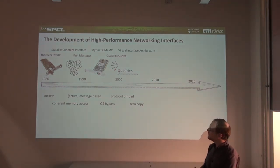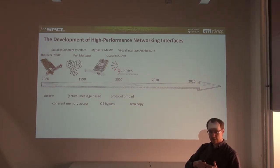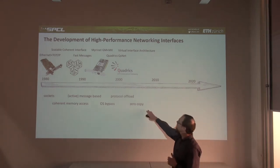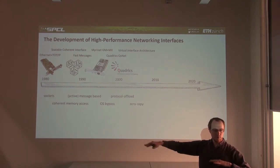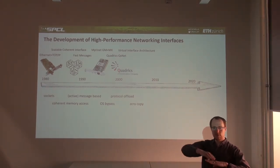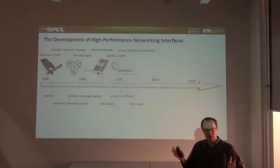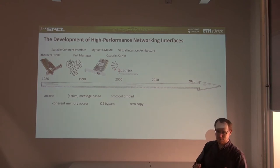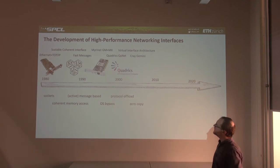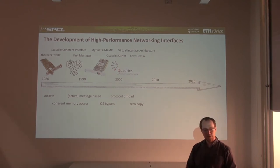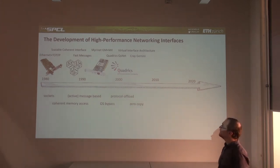This was followed by the Virtual Interface Architecture, which first introduced the concept of zero copy. Even though OS bypass existed, staging buffers were still used. The VIA interface brought the idea of a complete global virtual addressing mode, where you copy directly from the user-level buffer into the destination user-level buffer without additional copies. Zero copy really means one copy — from source to destination — with no additional copies. Cray Gemini then adopted a very similar mechanism.